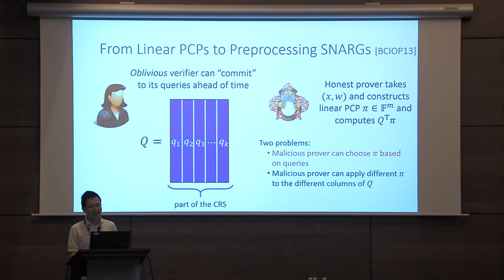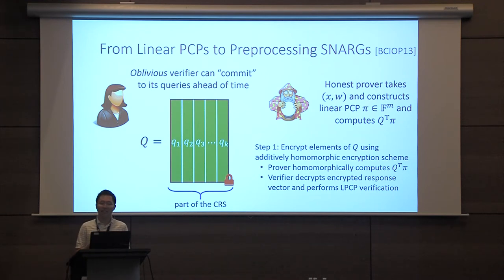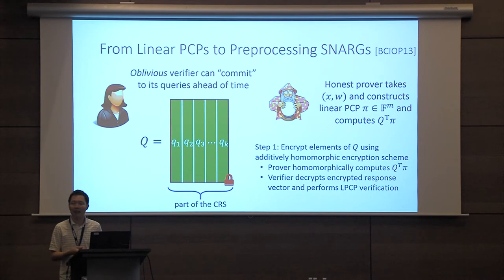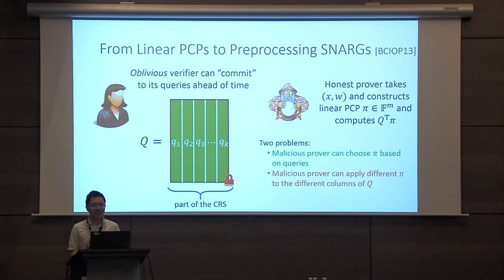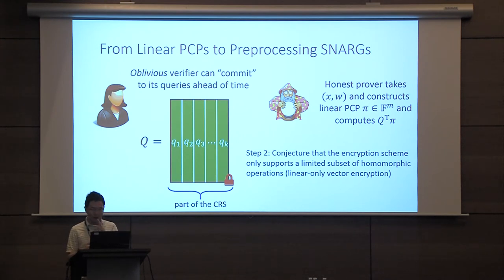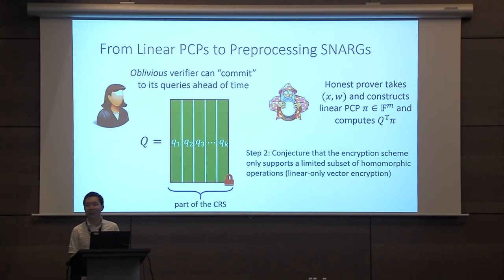For the first problem, instead of publishing the queries in the clear, we're going to encrypt them using an additively homomorphic encryption scheme. The additive homomorphism allows the prover to still compute the responses over the encrypted query vectors, and the verifier at the end decrypts the encrypted proof and applies the underlying linear PCP verification procedure. The second problem is actually more severe: the malicious prover can apply different linear functions or different functions altogether to the different components of the query matrix. The way we address this is by making a cryptographic conjecture — this is the second step of the compilation framework. In our work, we rely on a new primitive we call linear-only vector encryption.